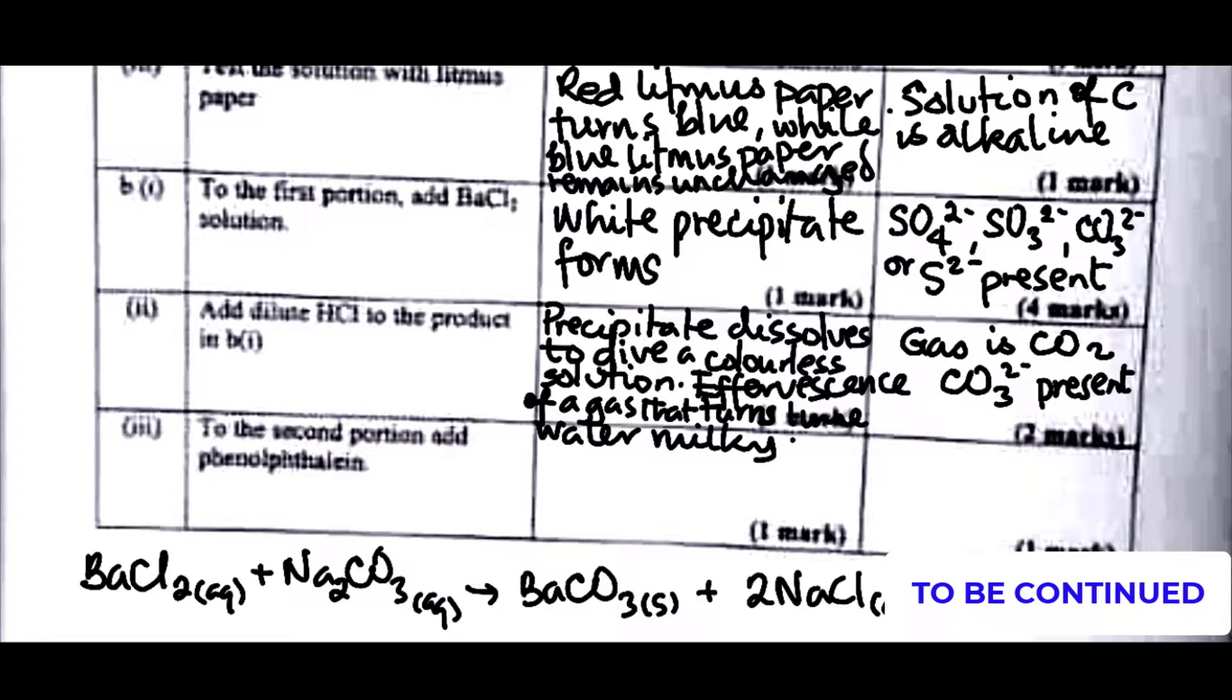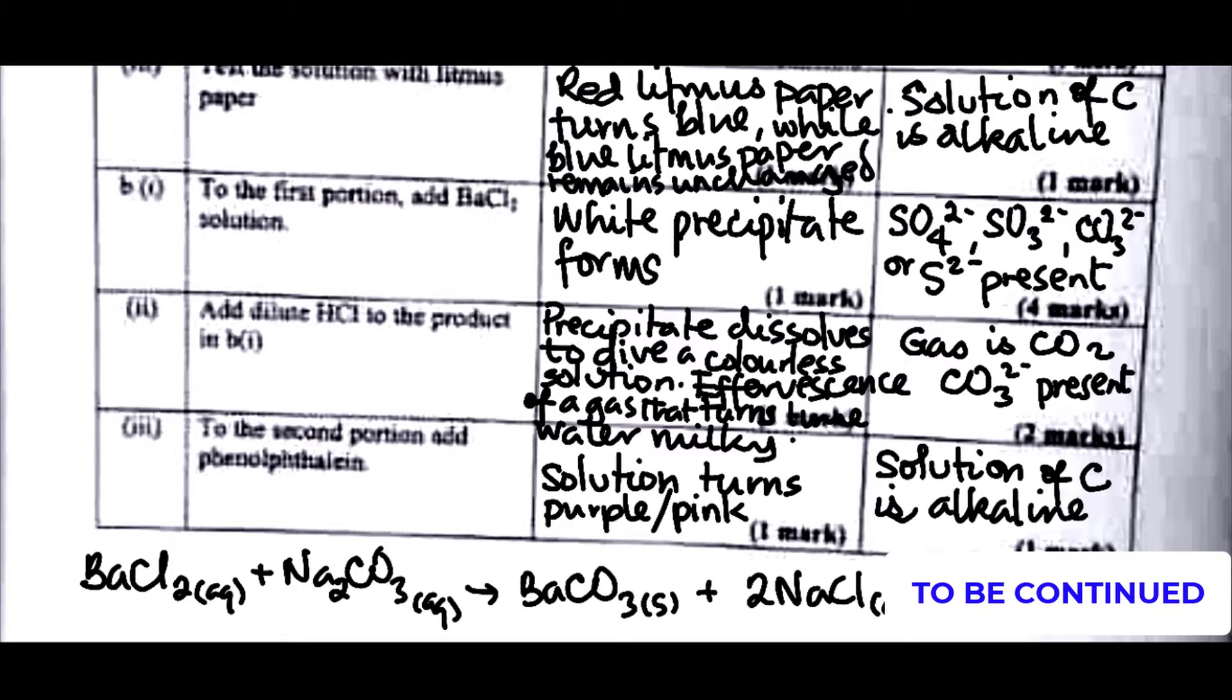But since we are working with CO3²⁻, that's why I had to leave it as that. Now the last question here, to the second portion add phenolphthalein. Fine, since we know that it's already alkaline in nature, so what would be the color? Phenolphthalein in an alkaline medium, that would be what? Solution turns purple or pink. Color of solution turns pink. What do we infer? Solution of C is alkaline.